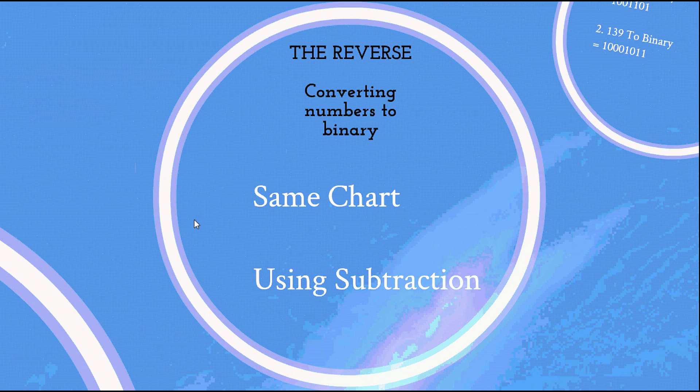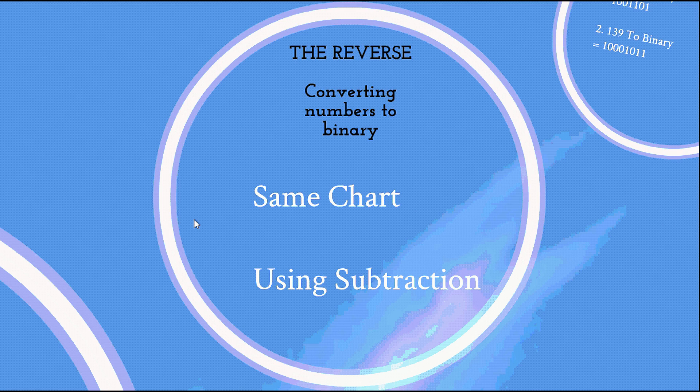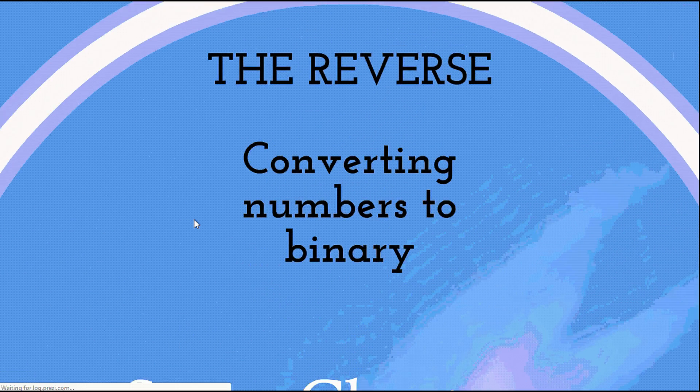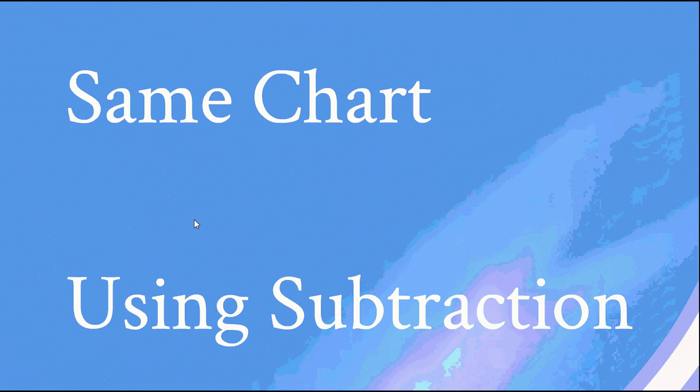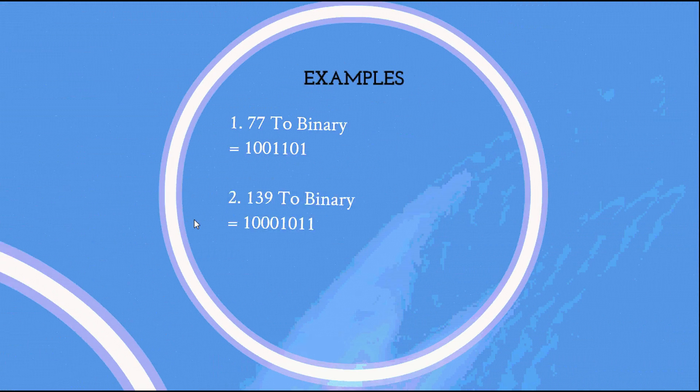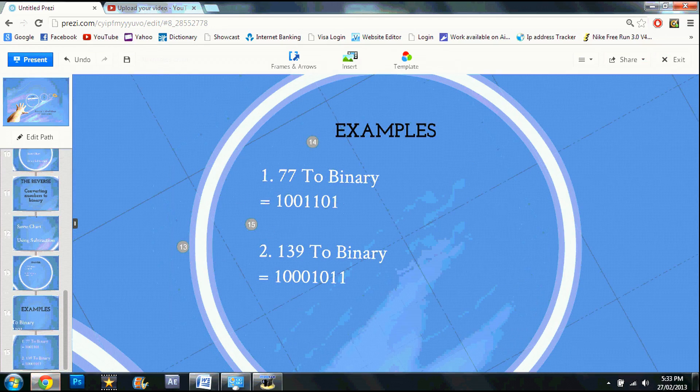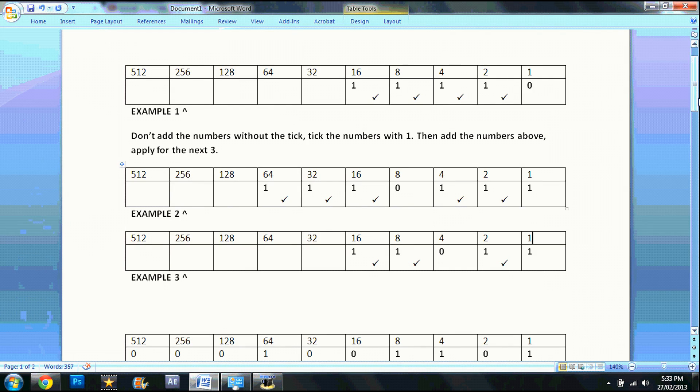Now this is a reverse. Converting the ordinary numbers such as 72, 64 to the binary system. It's the same chart and using subtraction. Slightly a bit difficult. Example: 67 to binary. Let's go back to our Word doc.